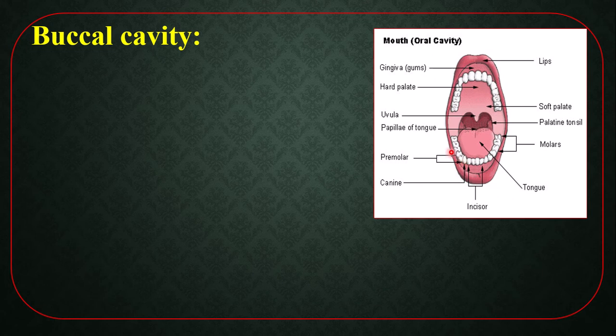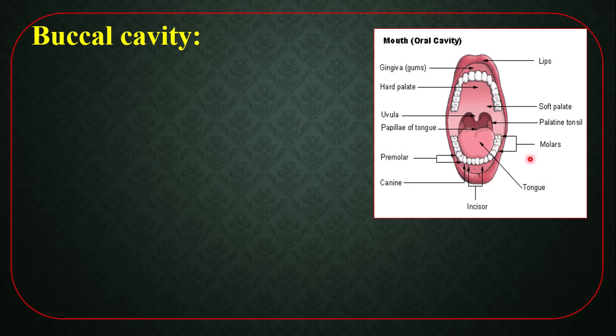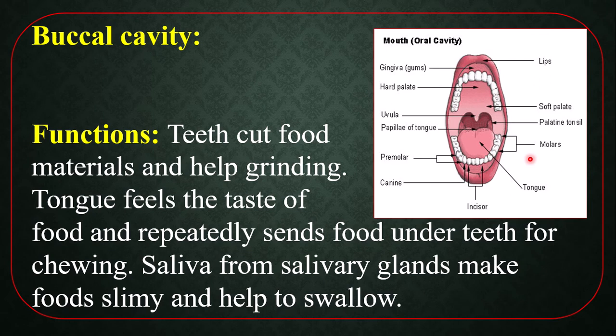Premolar teeth — these are premolar teeth, which help to grind and shred food materials. And finally, molar teeth — these help to grind and shred food substances. After the other teeth, wisdom teeth grow; wisdom teeth are actually a type of molar tooth. Function: teeth cut food materials and help in grinding. The tongue feels the taste of food and repeatedly sends food under the teeth for grinding. Saliva from salivary glands makes food slimy and helps to swallow.